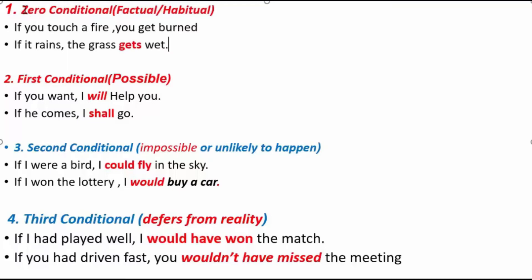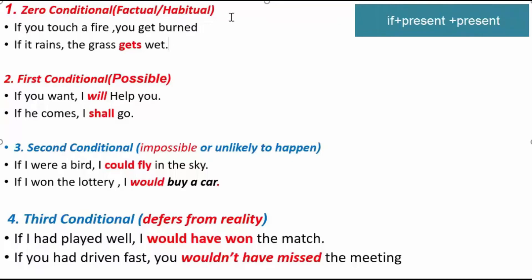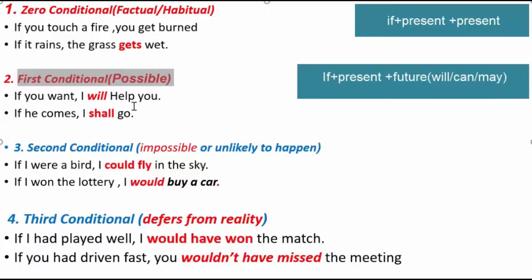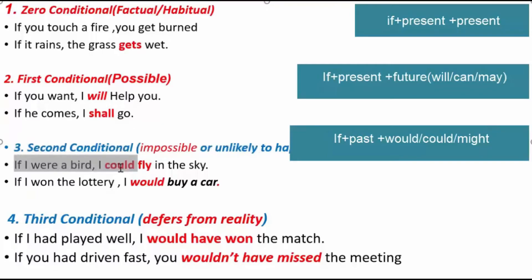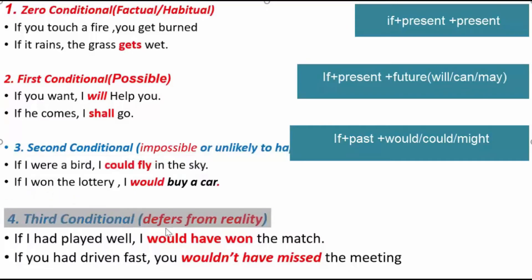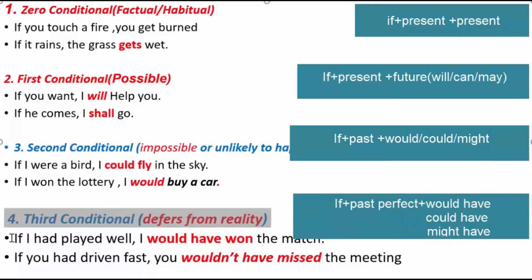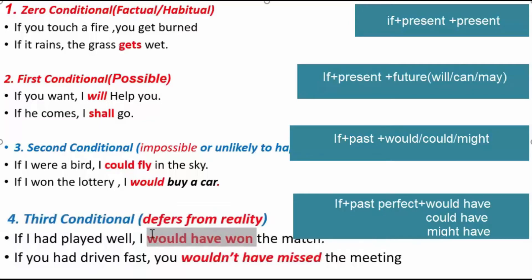Alright, let's review the structures. Second conditional is all about impossible situations. Structure: if plus past indefinite, then would, could, or might. Third conditional is all about opposite to reality. Structure: if plus past perfect, then would have, could have, or might have plus past participle.